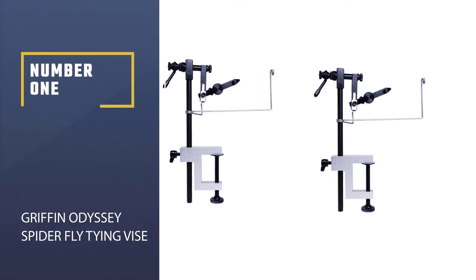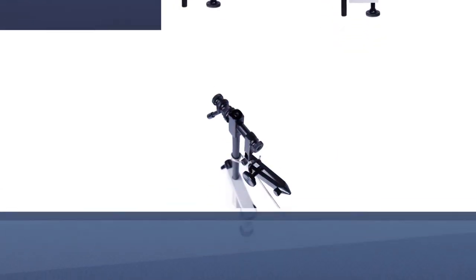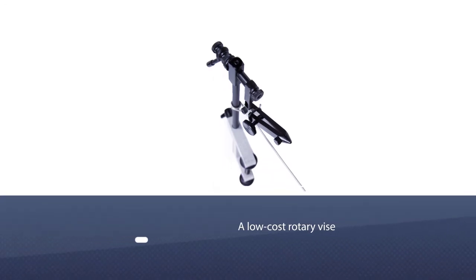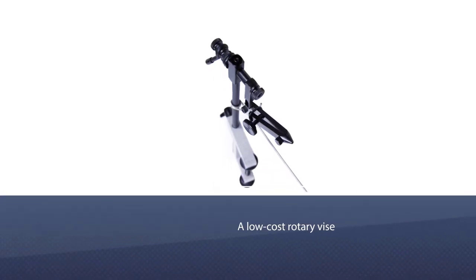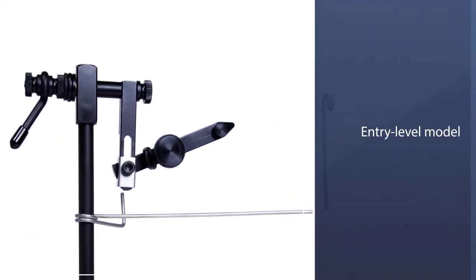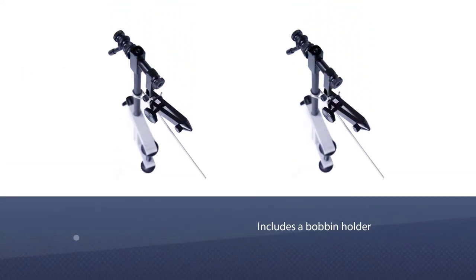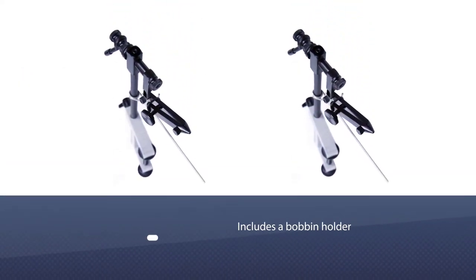Number 1, Most Popular. Griffin Odyssey Spider Fly Tying Vice. The Griffin Odyssey Spider is a low-cost rotary vise that offers you everything you need to tie some excellent flies. Without breaking the bank, this entry-level model has the most important features we look for in a vise, including a bobbin holder and full 360-degree motion.